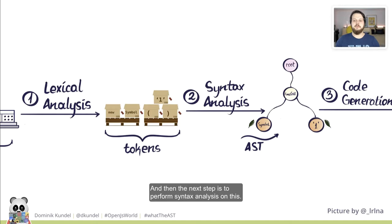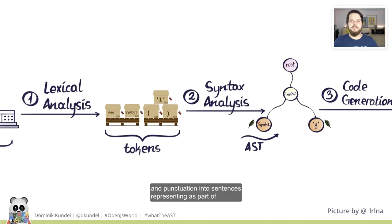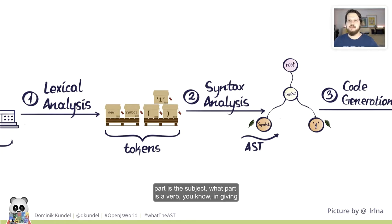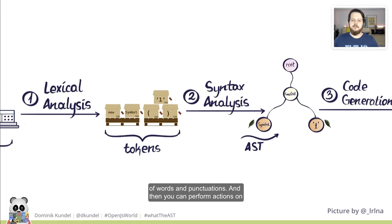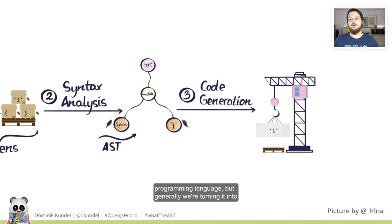The next step is to perform syntax analysis — we take the tokens we already have and create some structure around them in the shape of an AST, an abstract syntax tree, that represents how the program is actually structured. Imagine this as turning words and punctuation into sentences representing parts of paragraphs, where sentences contain information about what part is the subject, what part is a verb — giving all that detailed information rather than just a list of words. Then you can perform actions on those ASTs, and the last step is code generation: taking the AST and turning it into some output, whether machine code or another programming language.